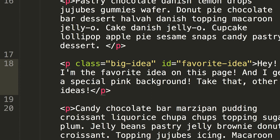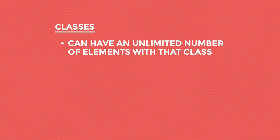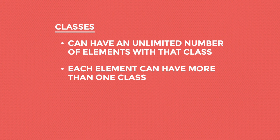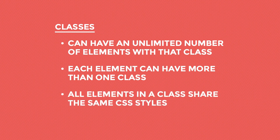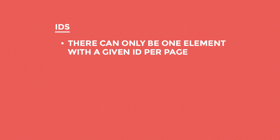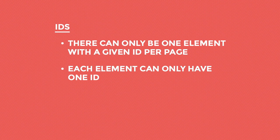One more thing — yes, you can use classes and IDs together. So there you have it, classes and IDs. Let's just review it one time to be safe. Classes can have an unlimited number of elements within that class, and each element can have more than one class. All elements in a class share the same CSS styles. IDs: there can only be one element with a given ID per page, and each element can only have one ID. You can think of it like a social security number or serial number for that element. With a little bit of practice, you are going to be a class and ID master in no time. Go ahead and click next and start practicing using classes and IDs.